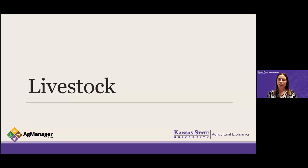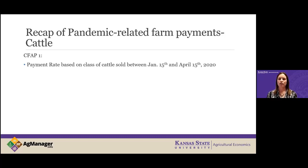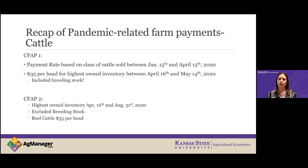Moving on to livestock — while row crops have the top-up payment on CFAP 2, livestock have a top-up payment on CFAP 1. CFAP 1 had a payment rate on cattle sold between January 15th and April 15th based on the class of cattle — fed cattle got a much bigger payment than feeder cattle. Any cattle in inventory between April 16th and May 14th received a $33 per head payment based on your highest owned inventory, and breeding stock was included. By contrast, CFAP 2 used highest owned inventory between April 16th and August 31st at $55 per head, but did not include breeding stock.